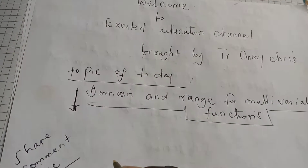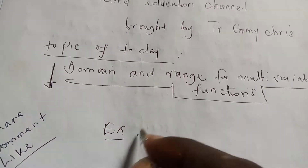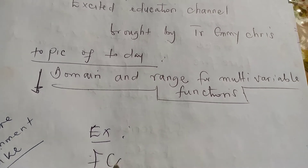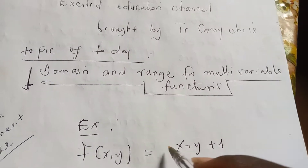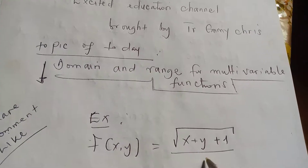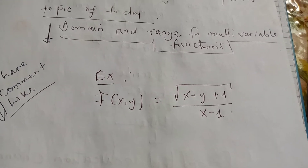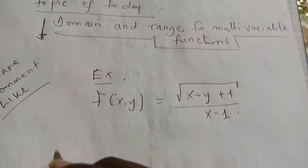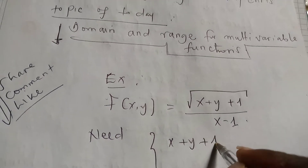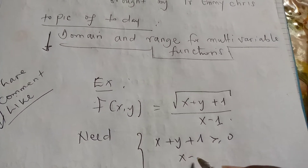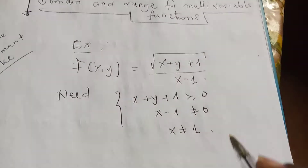Here we have Example 1: f(x, y) = √(x + y + 1) / (x - 1). We are going to find the domain and range for this multivariable function. We need to know that x + y + 1 is greater than or equal to zero, and x - 1 is not equal to zero, meaning x is not equal to one.